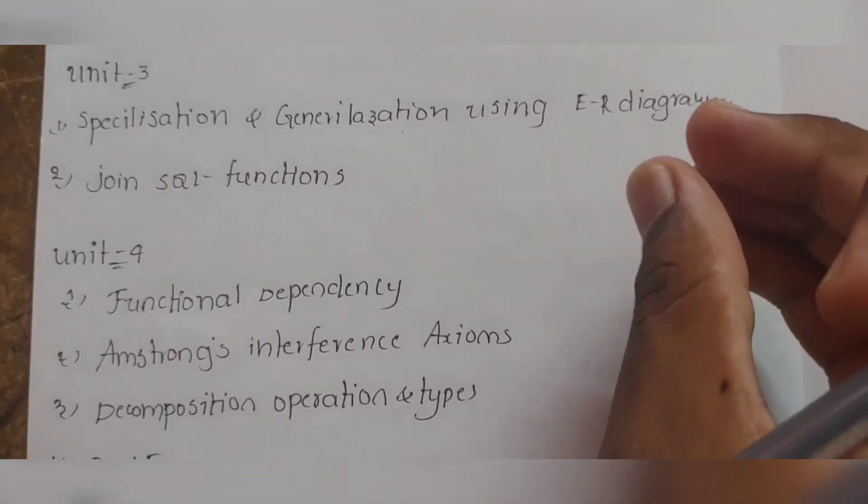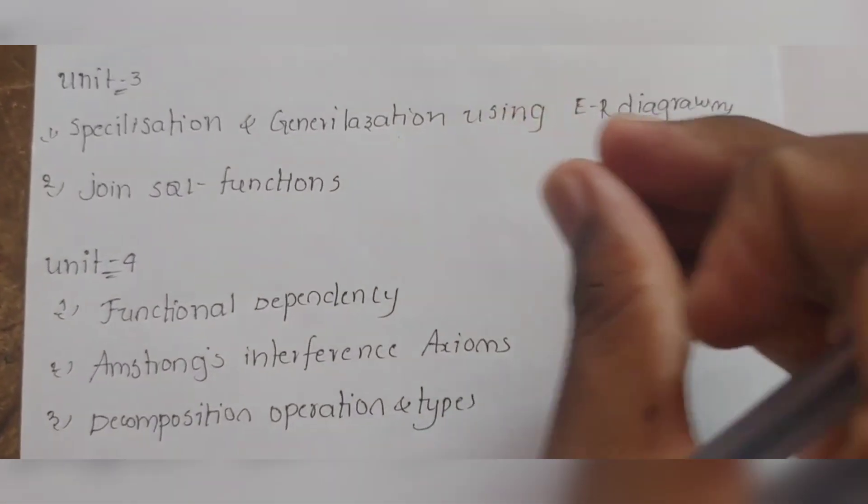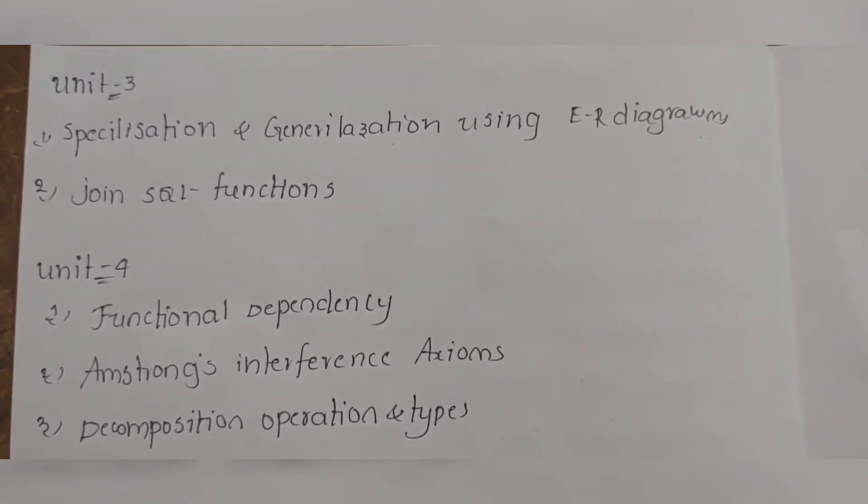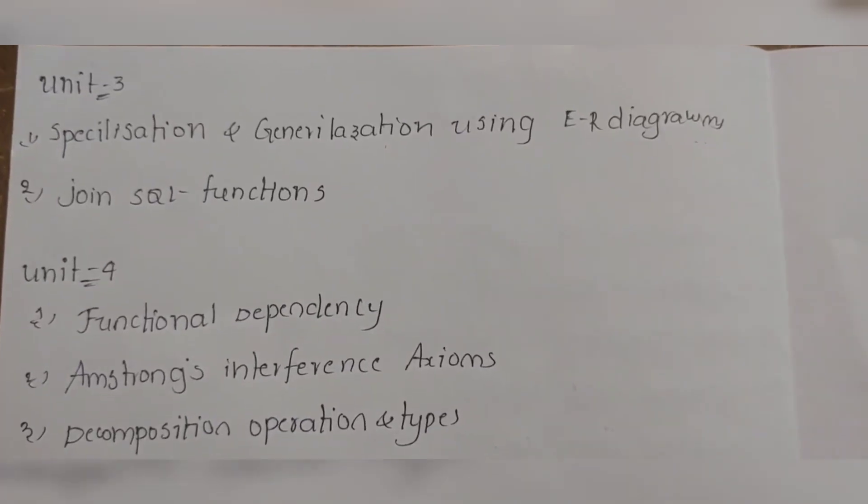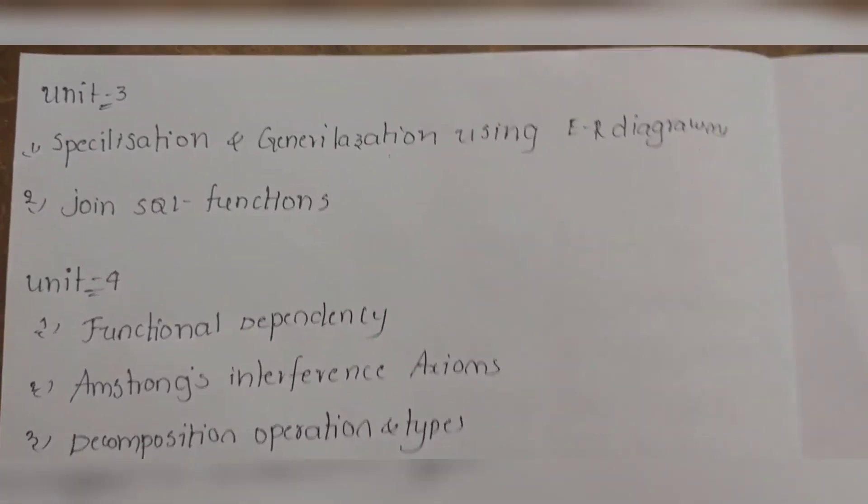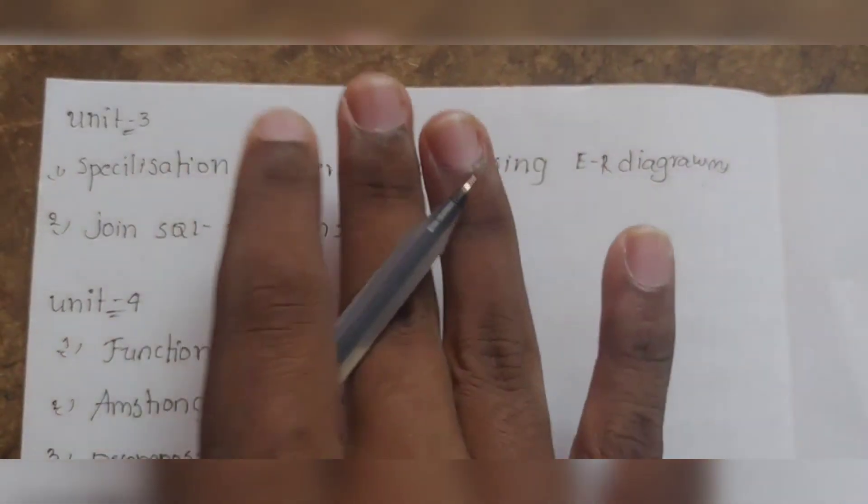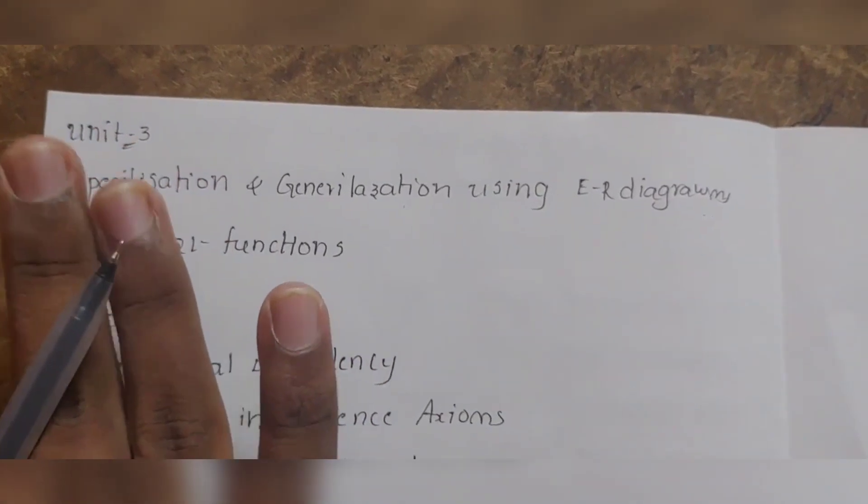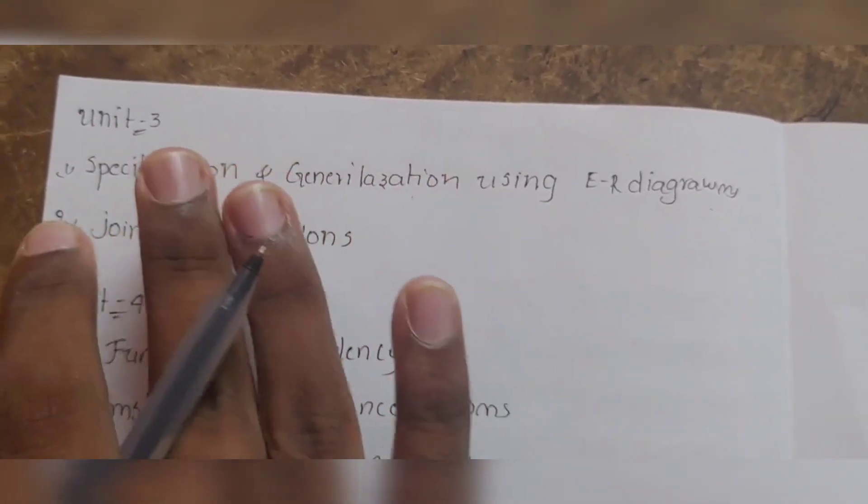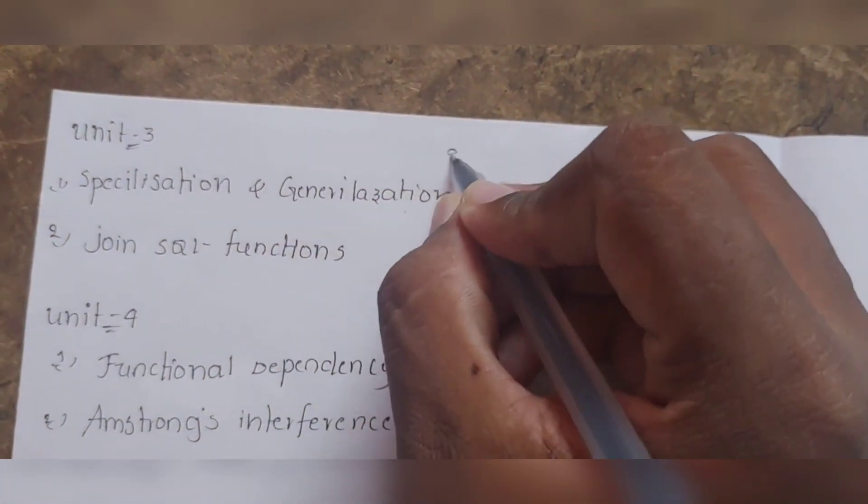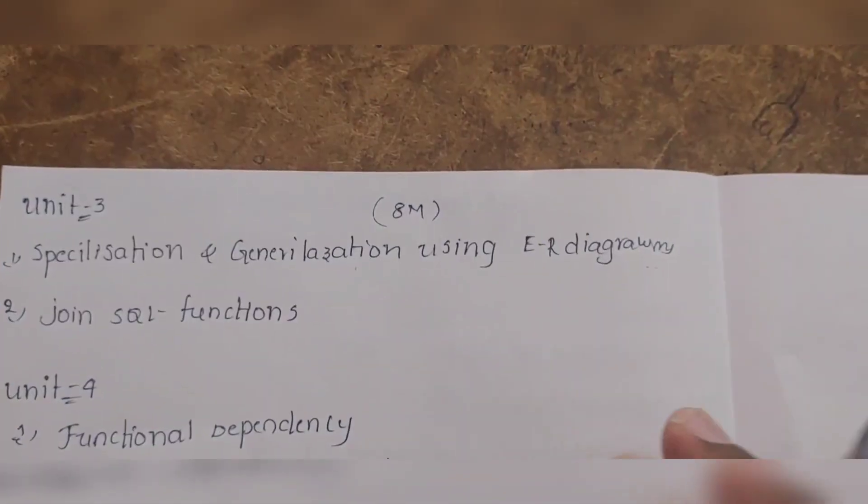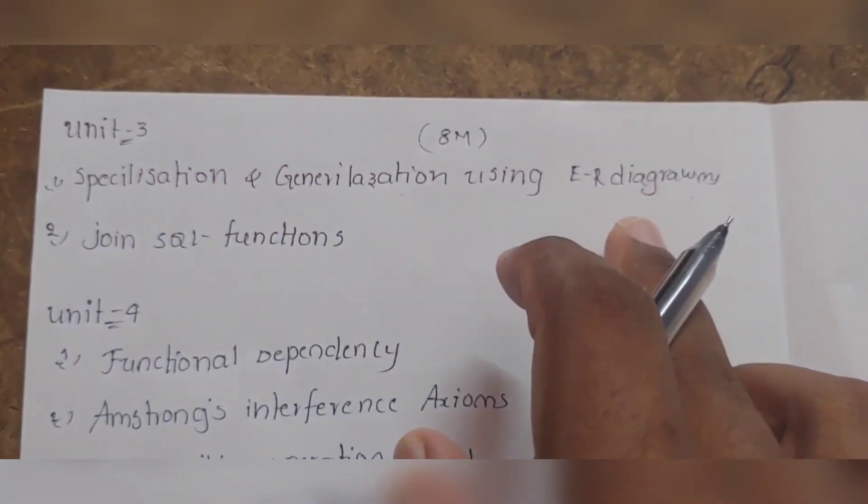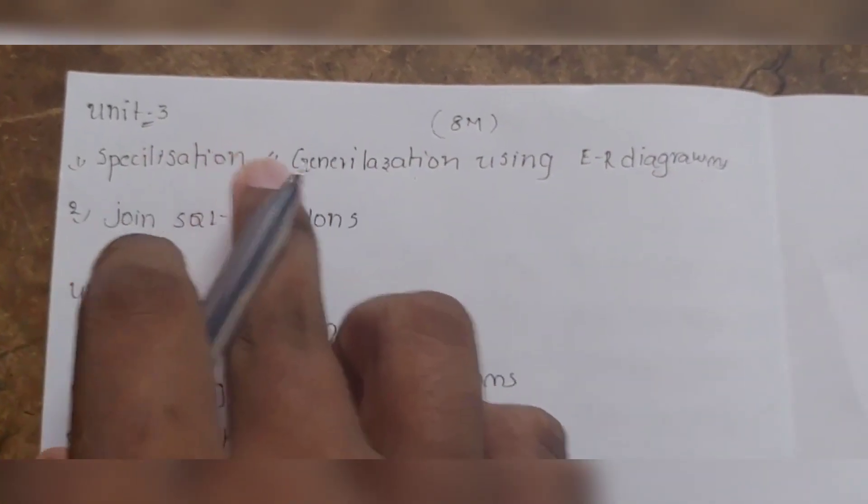Join SQL functions - this is 7 marks for JNTK R20 students. Specialization in detail. Using ER diagrams and entity relationship models - ER diagrams, each and every part explain. This is 8 marks for R20 and 8 marks for R19.